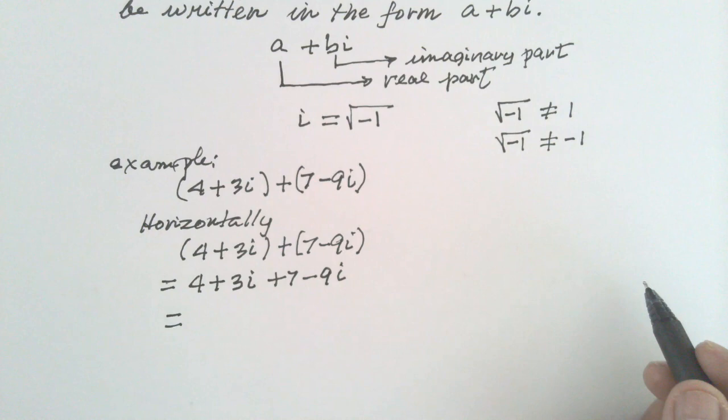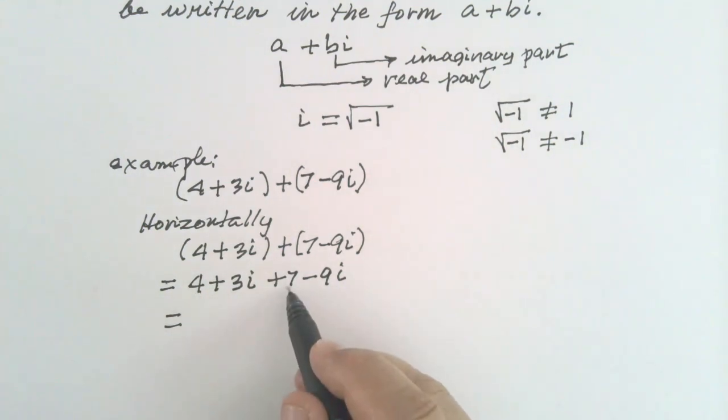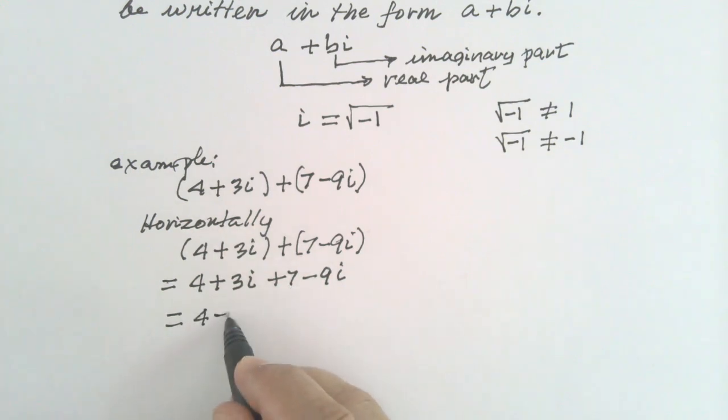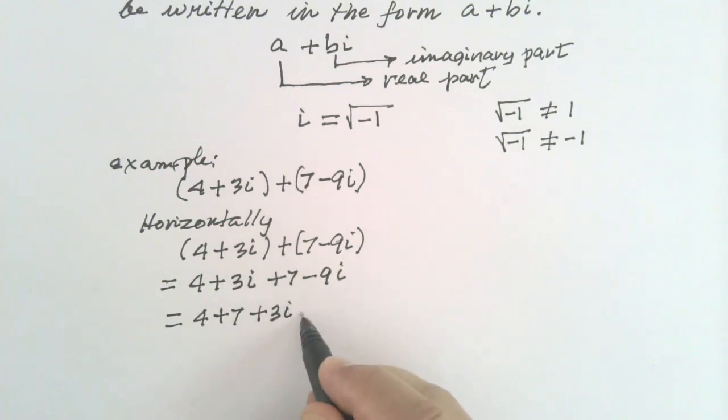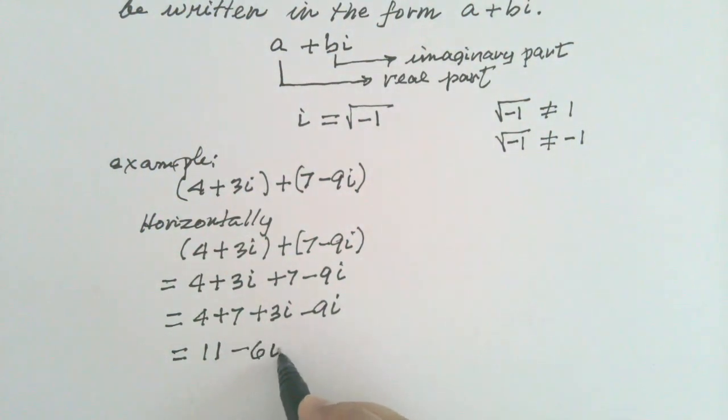Next. Combine the real parts. 4 plus 7. Let us show that. 4 plus 7. And then add 3I to negative 9I. These are the imaginary parts. 4 plus 7 is 11. Positive 3I, negative 9I is negative 6I.